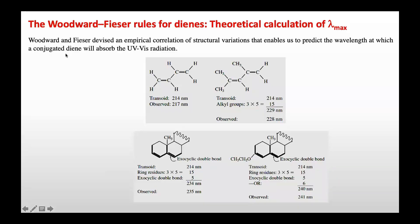First we will discuss dienes. Woodward and Fieser devised an empirical correlation of structural features that enables us to predict the wavelength at which a conjugated diene will absorb UV-visible radiation. This is an example of a transoid diene — a trans diene — and they absorb UV light at 214 nanometers.